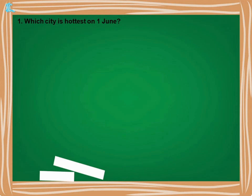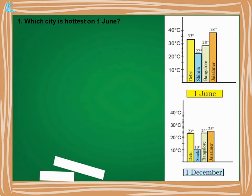Which city is hottest on 1st June? We look at the 1st June bar chart and find which city has the highest temperature. The temperature is highest in Jaisalmer. So Jaisalmer is the hottest city on 1st June.